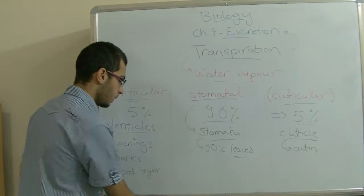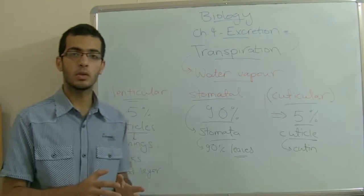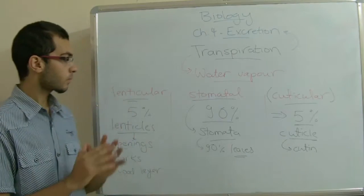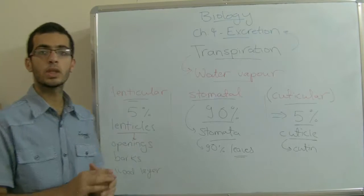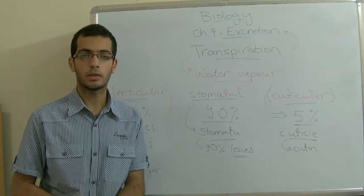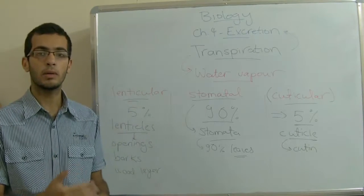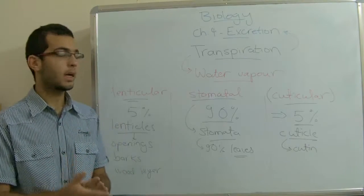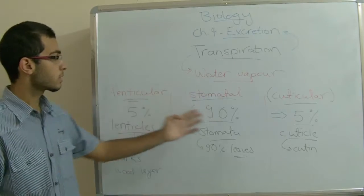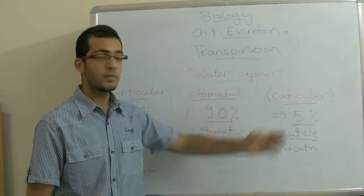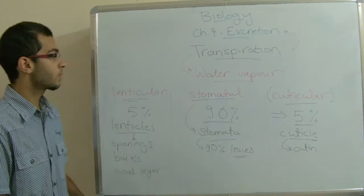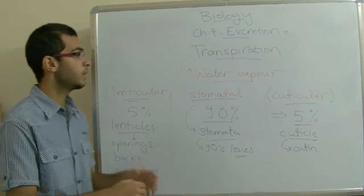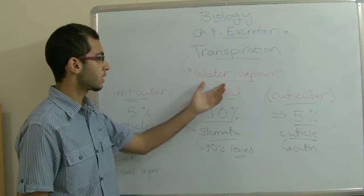At last, we need to know that the mesophyll tissues have outer layers which contain a lot of intercellular spaces in order to allow the water to move from these mesophyll tissues into the stomata, lenticels, or cuticle layer in order to be transpired or excreted in the form of water vapor.